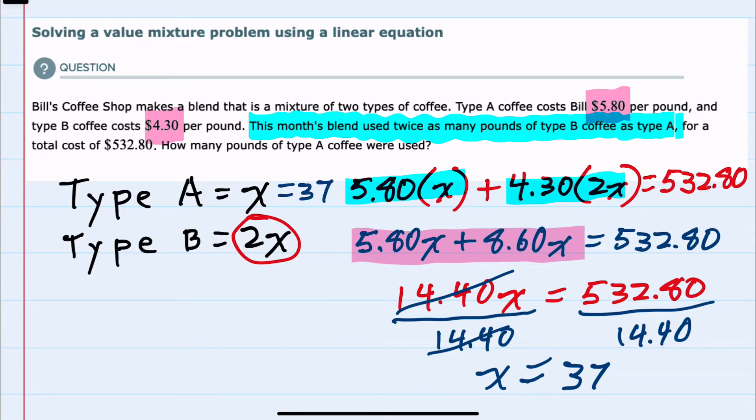Type B would be twice that, or 74. And since we were only asked for how many pounds of type A coffee were used, our answer would be 37 pounds.